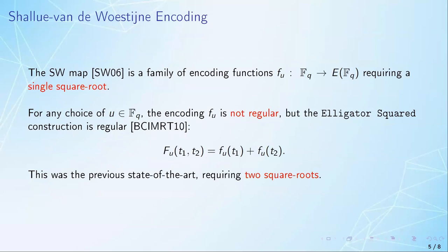Now, the main ingredient in our construction is the Shallue-van de Woestijne map, which is actually a family of encodings, so for each field element u, we obtain an encoding fu. These encodings are quite efficient, as the main cost is a single square root computation. However, for any choice of u, the encoding fu is not regular.